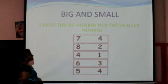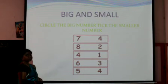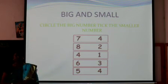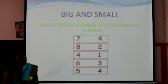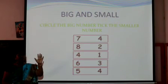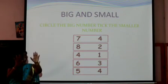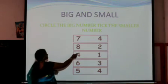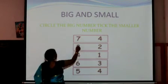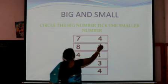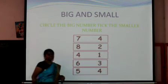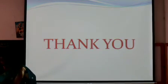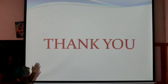Next is eight and two. Which one is bigger — eight or two? You can count on your fingers: two is just one, two, but eight is five plus three. So eight is bigger — you're showing more fingers. Circle eight because it's big, and put a tick mark on two because that's the smaller number.